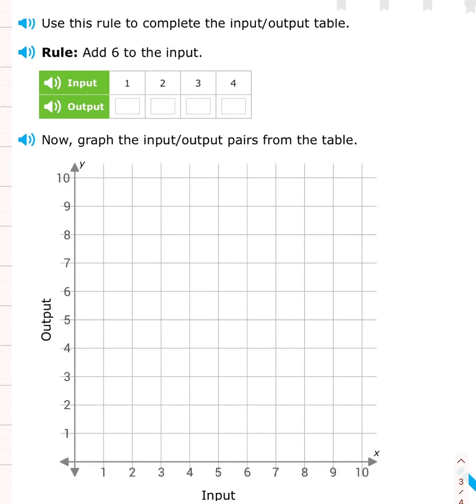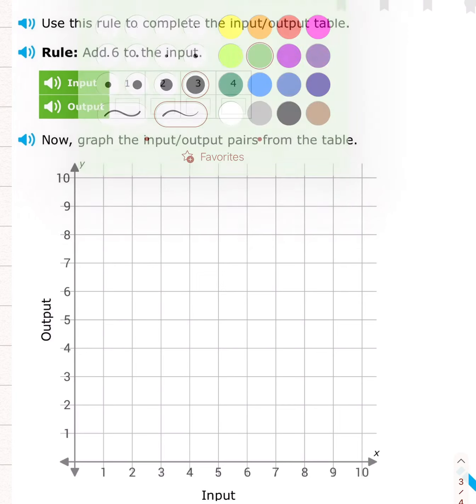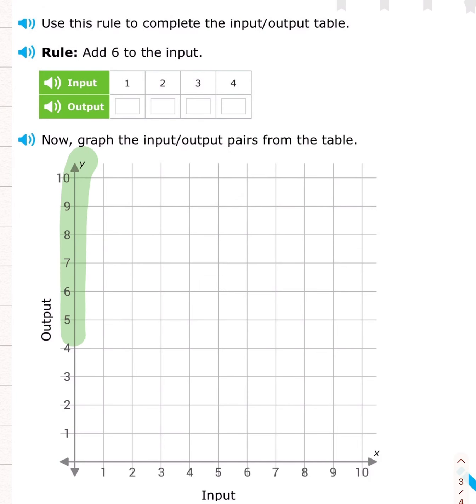Another part of a coordinate graph is the y-axis right here. See that letter y up there? That's the y-axis. And the y-axis tells us how far up or down a point is. It tells us the vertical position of a point. Is a point up here, or is it down here? Or is it way down here?